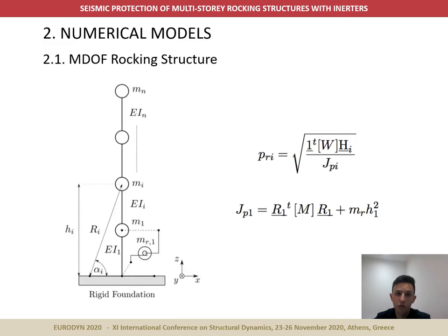The dynamic response of multi-mass rocking structures equipped with inertors can be studied considering the system shown in this figure. In this model, the rocking structure is represented by n masses connected by elastic beam-column elements of flexural stiffness EI and supported by a rigid base allowed to uplift. Two degrees of freedom per level are considered: lateral displacement and rotation. The structure is characterized by the frequency parameter PRI and has a grounded inertor connected at the first level. This equation shows that, again, the inertor reduces the frequency parameter of the structure, although the effect in this case is less significant than in the rigid block case.